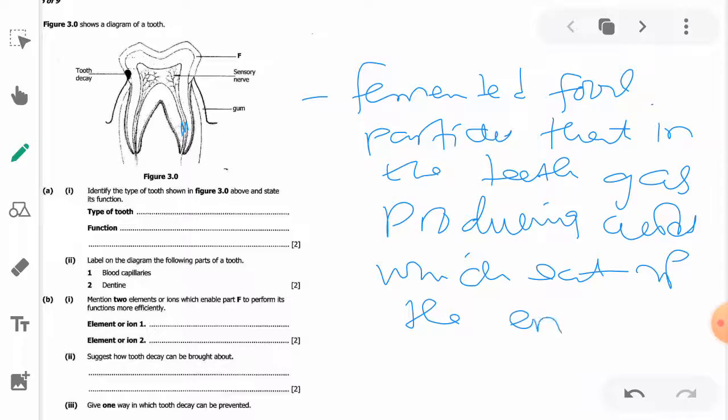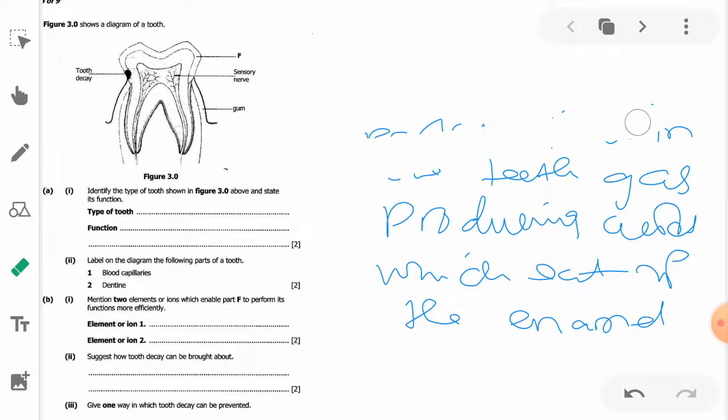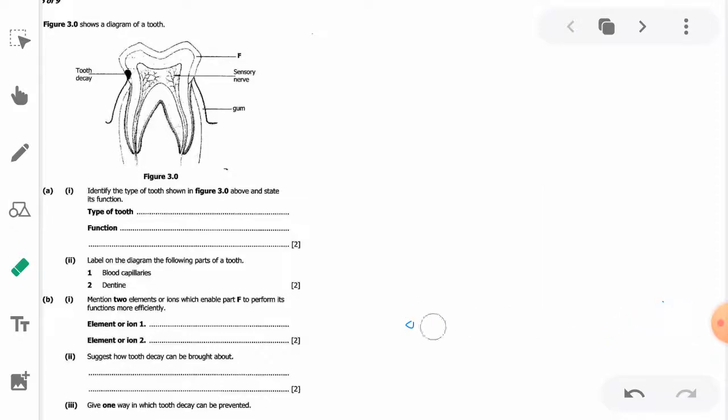Part D gives one way in which tooth decay can be prevented. How can we prevent tooth decay? They're just saying give one way in which you can prevent tooth decay. One of the ways is by brushing teeth regularly.